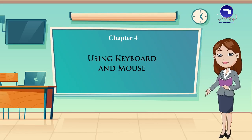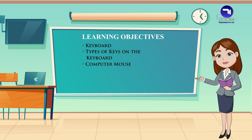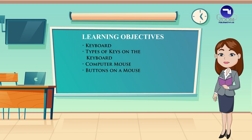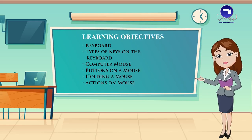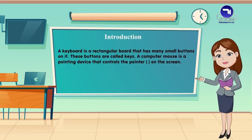Using Keyboard and Mouse. Learning Objectives: Keyboard, Types of Keys on the Keyboard, Computer Mouse, Buttons on a Mouse, Holding a Mouse, Actions on Mouse, Drag and Drop. A keyboard is a rectangular board that has many small buttons on it. These buttons are called keys. A computer mouse is a pointing device that controls the pointer on the screen.